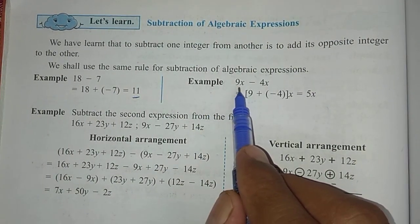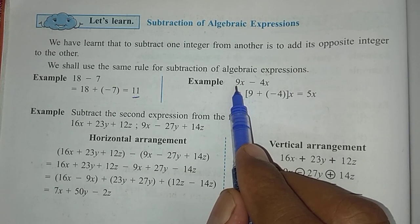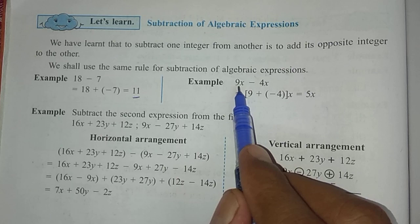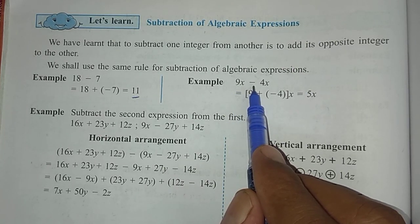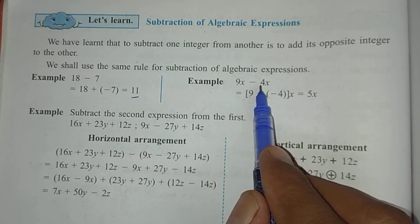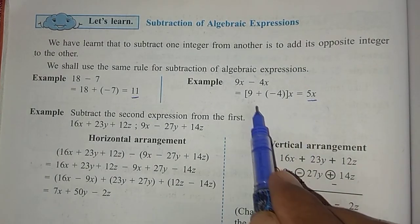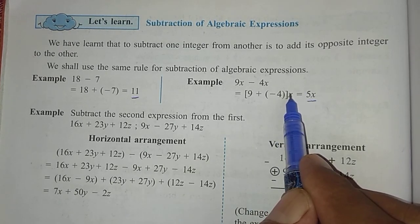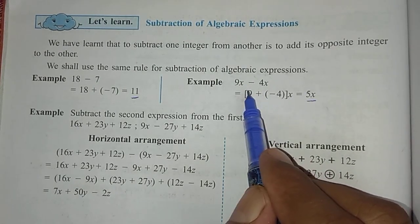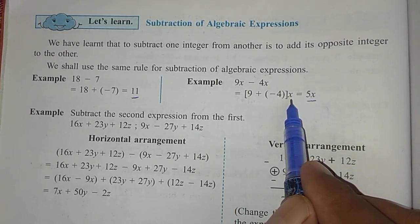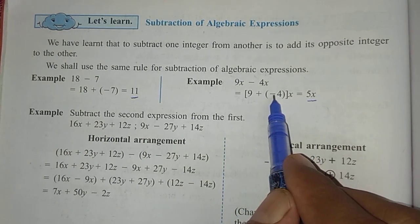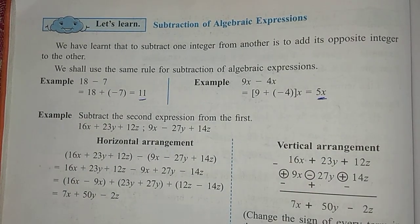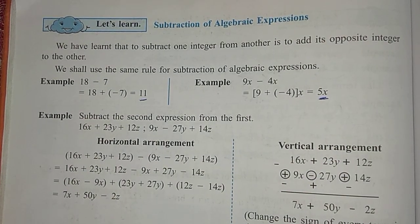One more example: 9x minus 4x. Suppose 9 govas minus 4 govas — if you are having 9 govas and from that you give 4 govas to someone, how many will remain? 5 govas. In the same way, 9 plus (minus 4), and x is common to both, so it is taken as common. Plus minus becomes minus, so 9 minus 4 is 5, and the answer is 5x.